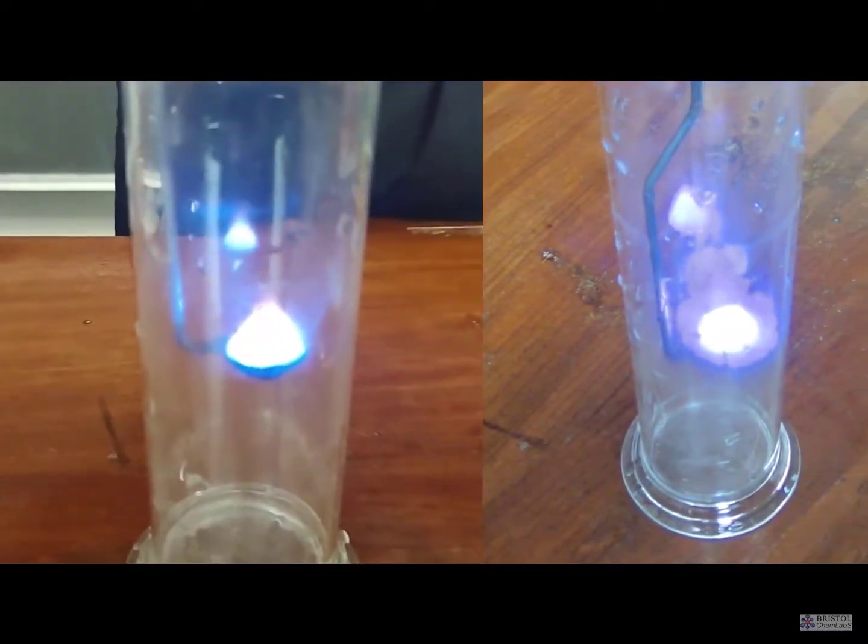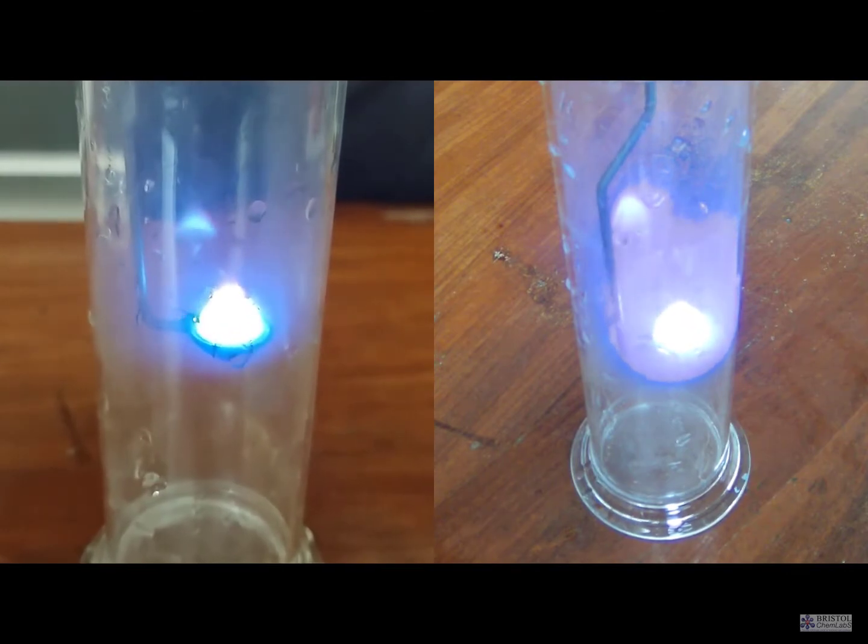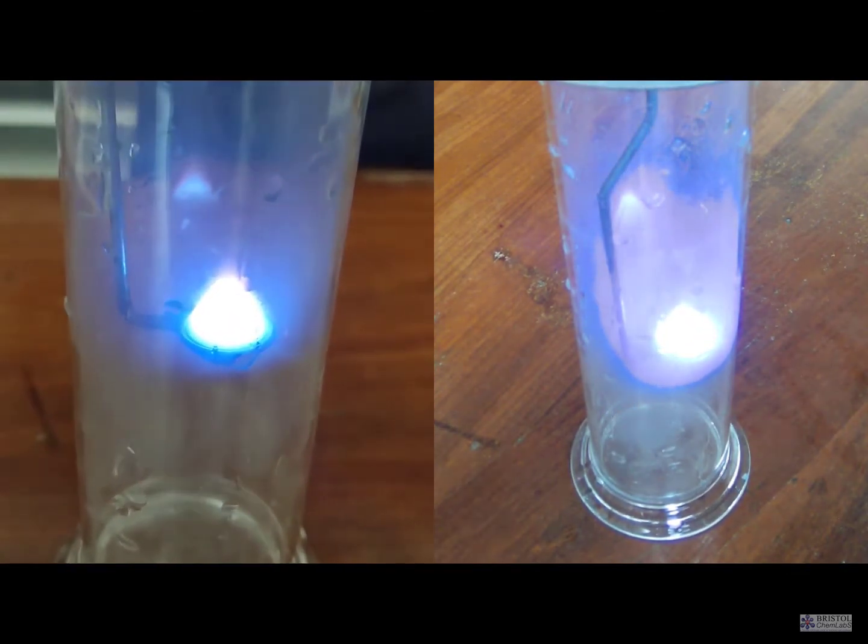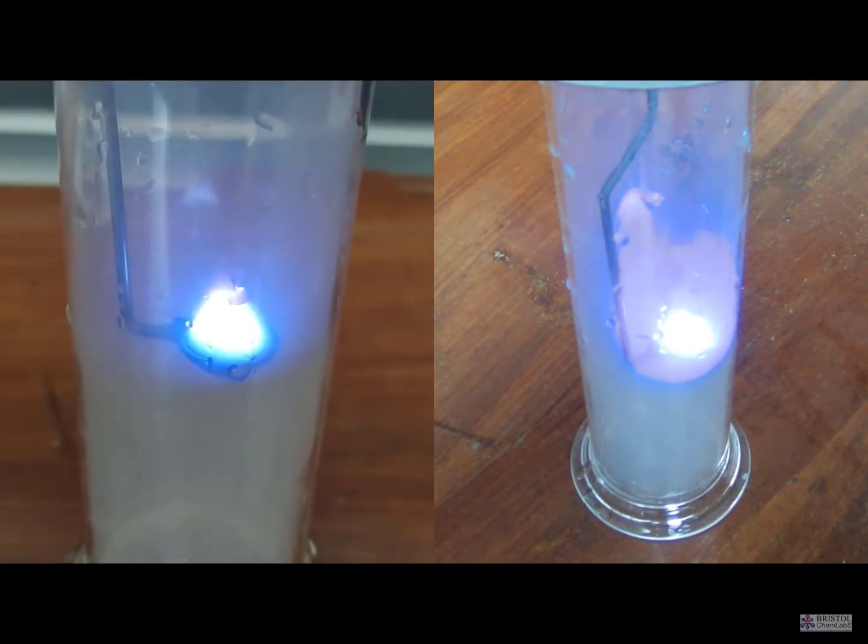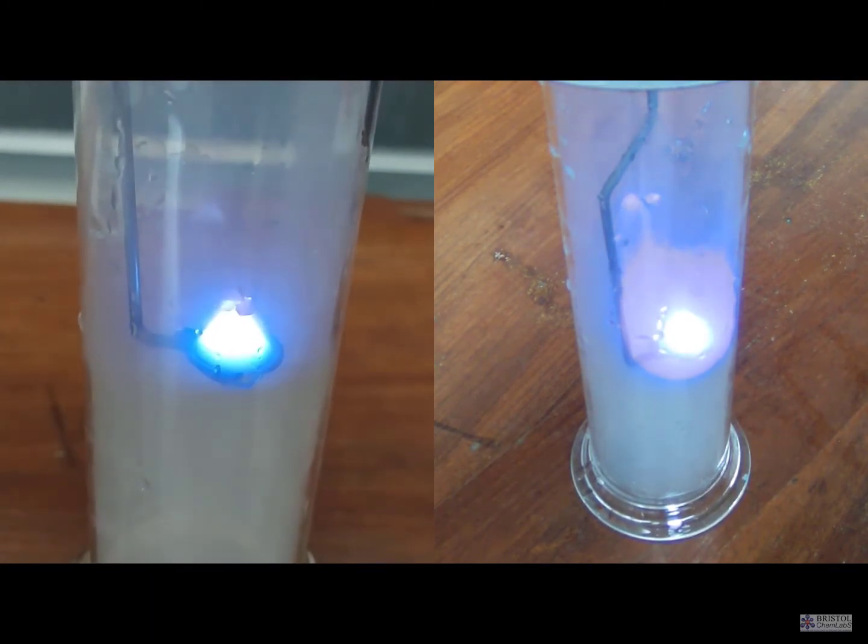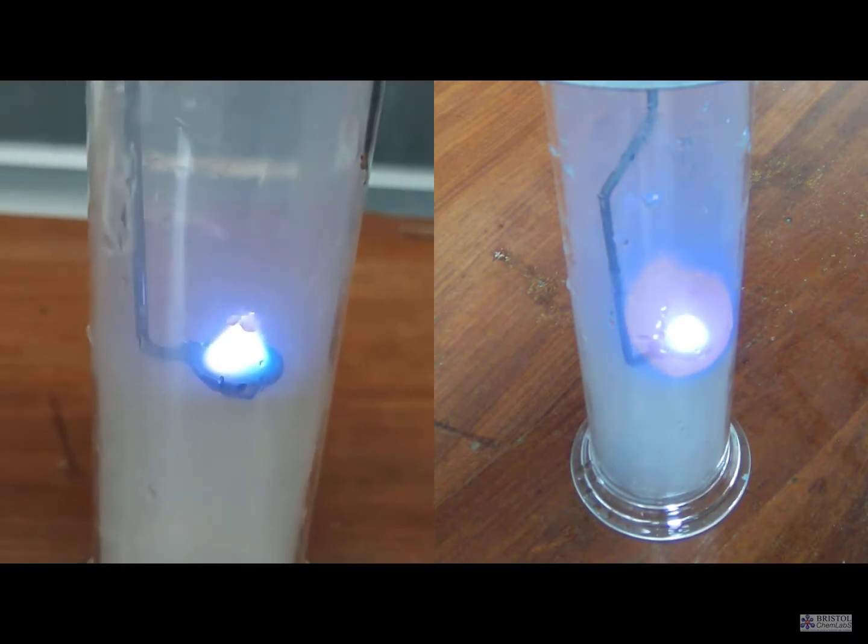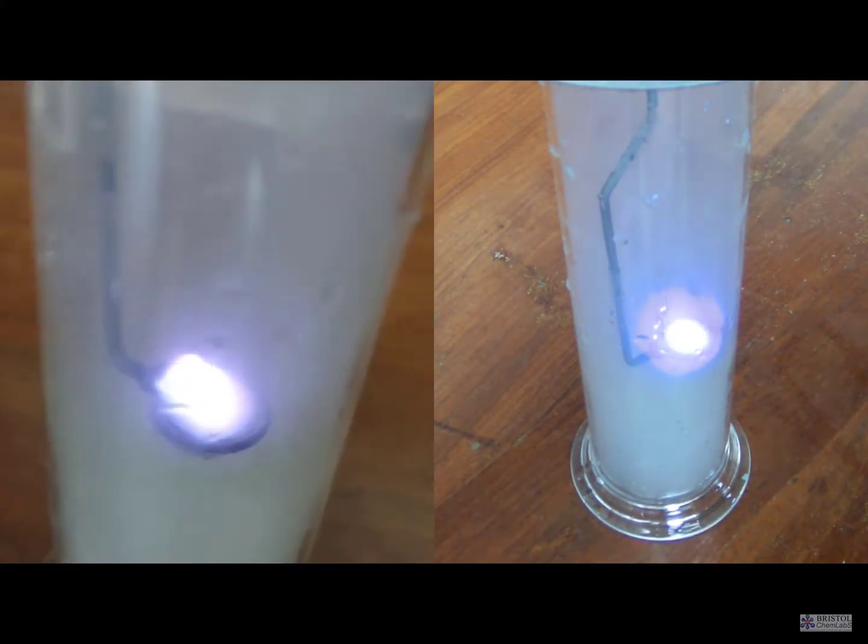Whether you're using sulfur or magnesium, you need to get the reaction started. So you're going to need a Bunsen flame nearby. Get them starting to burn in air and then quickly transfer them into the gas jar.